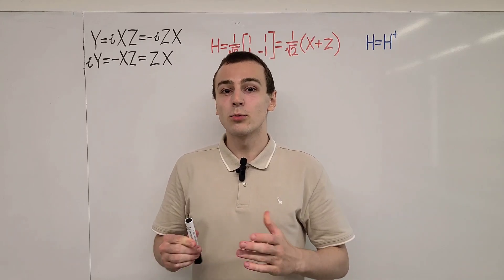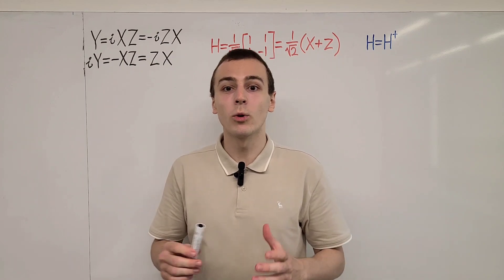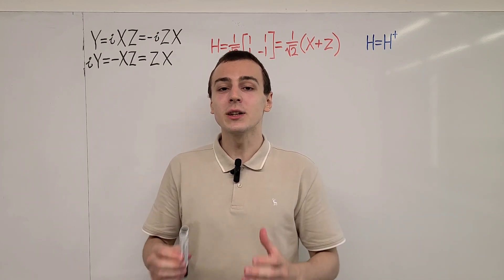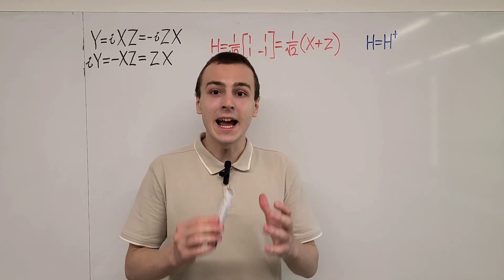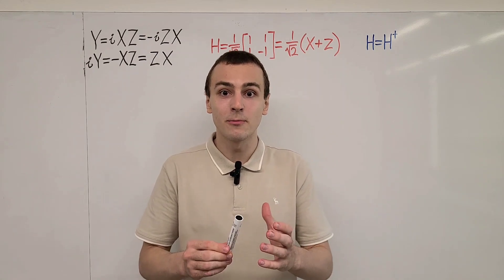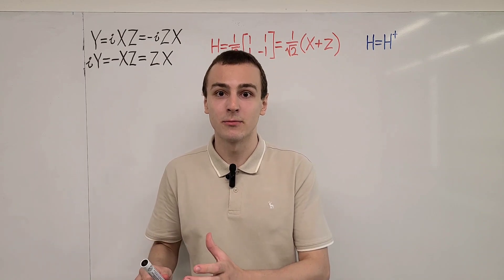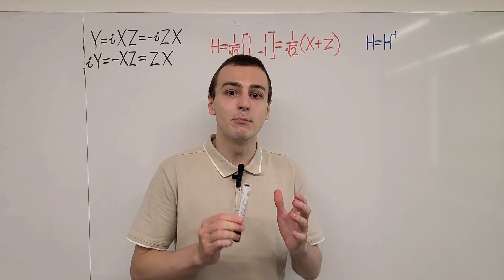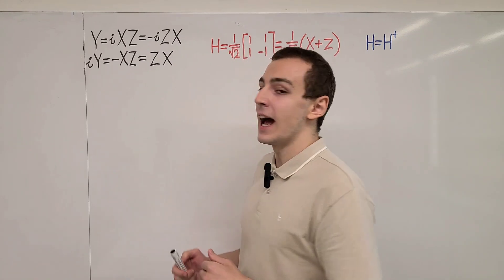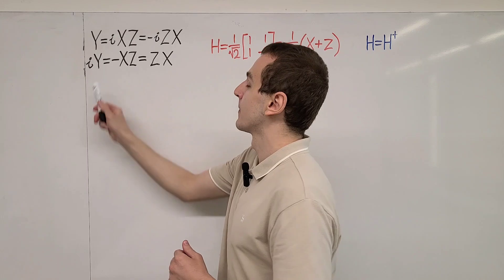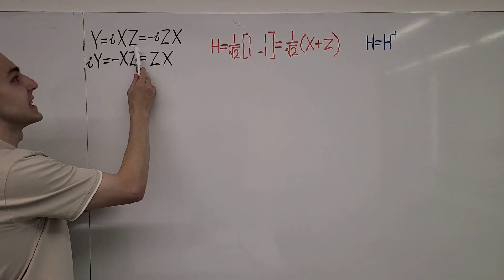Let's investigate the properties of the Hadamard gate. In previous videos in the quantum mechanics playlist, I talked about the Pauli matrices. We saw how the Pauli X gate can be thought of as a bit flip, and the Pauli Z gate can be thought of as a phase flip. And if we apply a bit flip and a phase flip, we get the same action as the Pauli Y operator. So we can express the Pauli Y operator as the product of X and Z.